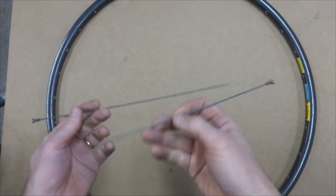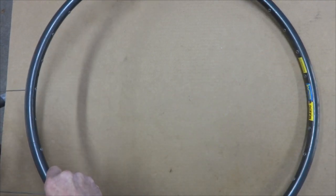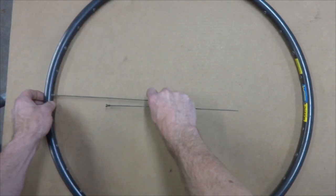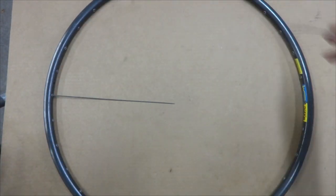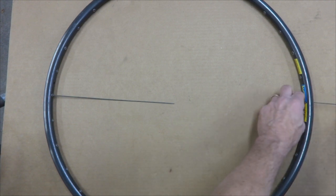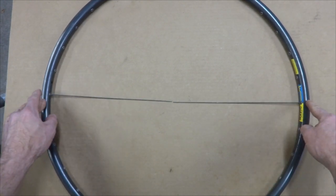Now, to measure the ERD of a rim using these tools, you're going to insert the spoke into the spoke hole here on one side of the rim, and then go around to the exact opposite side of the rim and insert the other tool through there. Make sure that the nipples are fully seated into the rim.